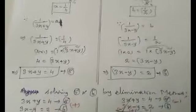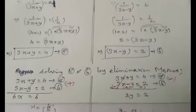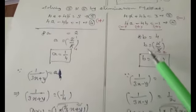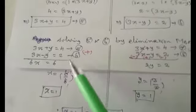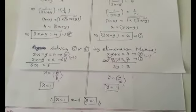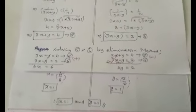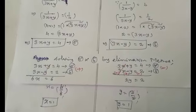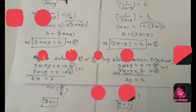In this type of problem we have to do two sets of elimination: the first set is to find 'a' and 'b', and the second set is to find x and y.